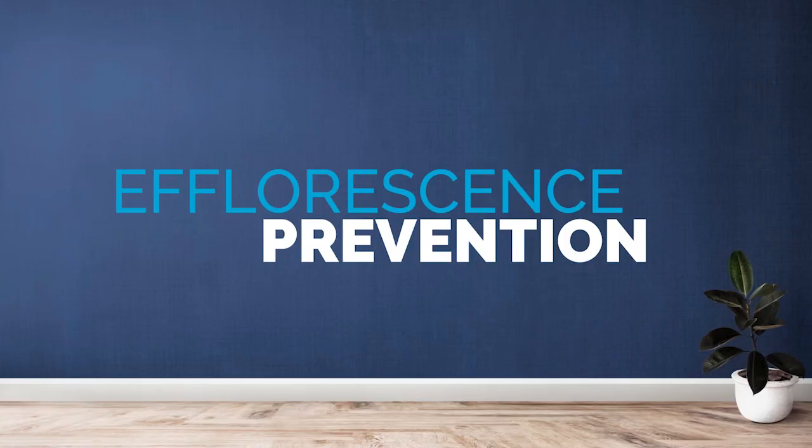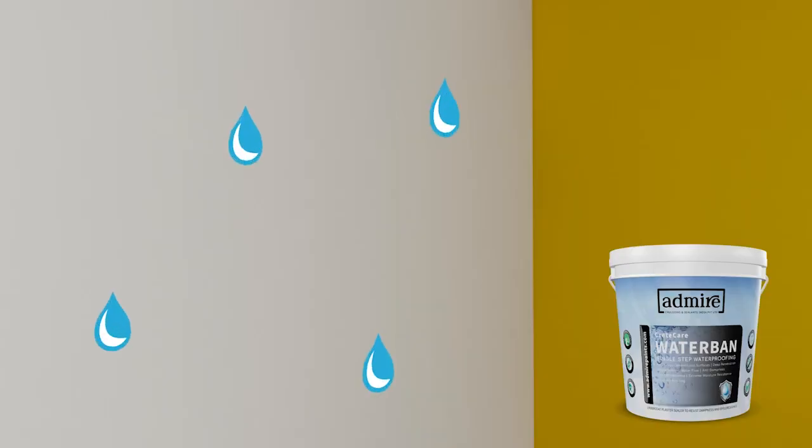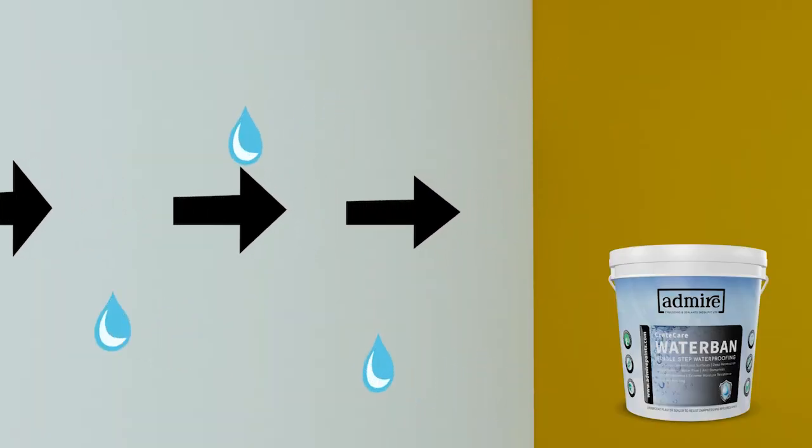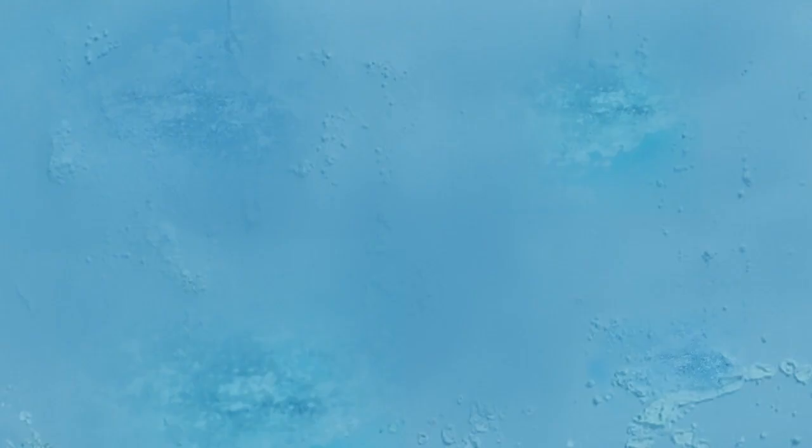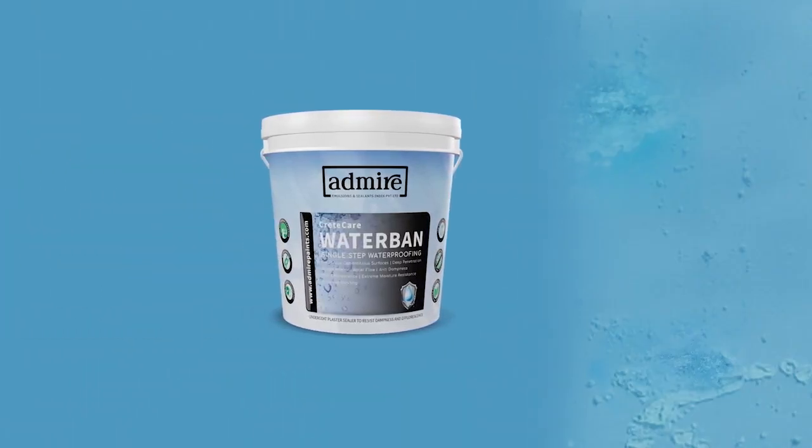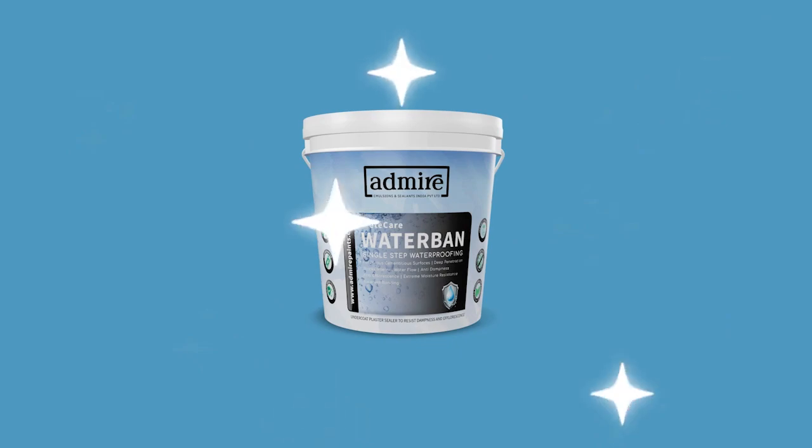Efflorescence Prevention: By forming a potent barrier against water penetration, Crete Care Water Ban stops the migration of alkali and corrupts the formation of efflorescence, keeping your surface pristine and salt-free.